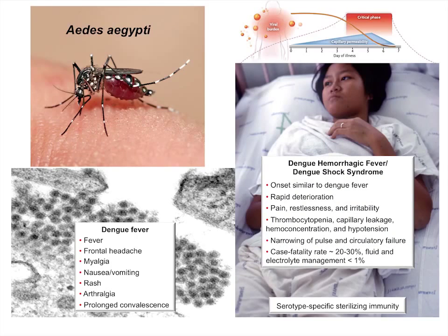One of the key things that happens is the capillaries start to leak — fluid is released out of the capillaries and the cellular part of the blood increases. If you don't correct that by intravenous fluids and electrolyte management, the person can go into shock and die. Fortunately, physicians in many parts of the world know how to manage this. If you don't correct it, the mortality rate is 20 to 30 percent; otherwise you can knock it down to less than 1 percent.